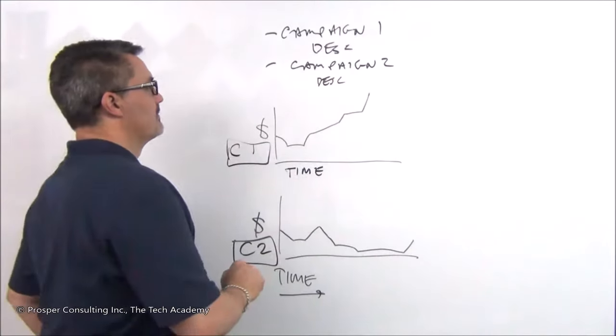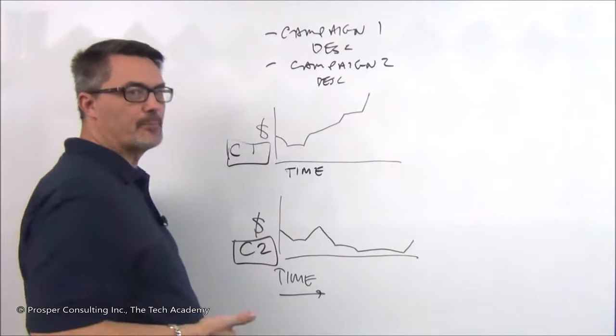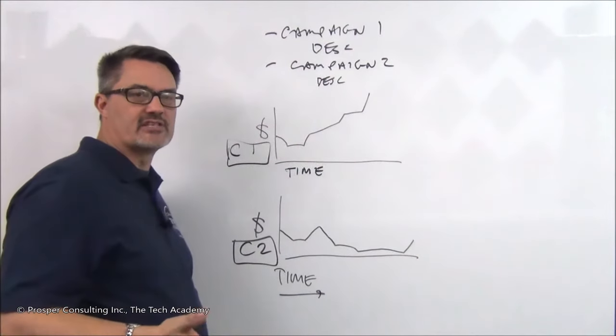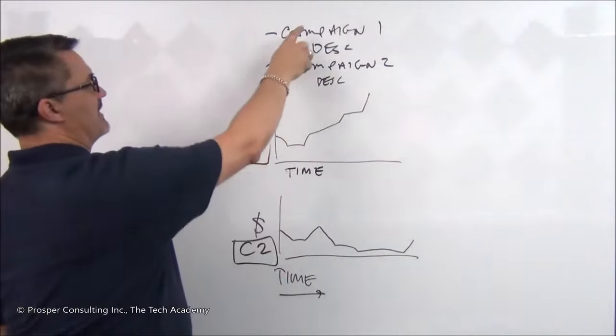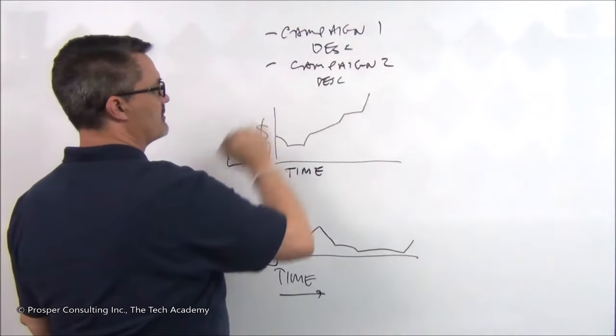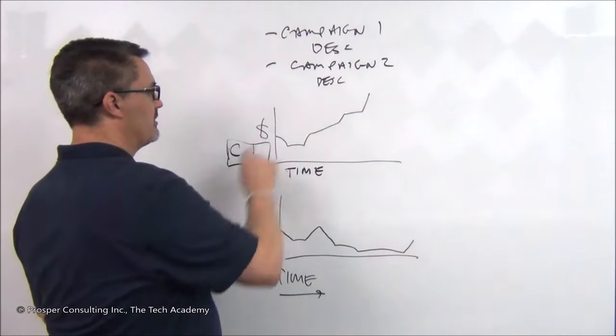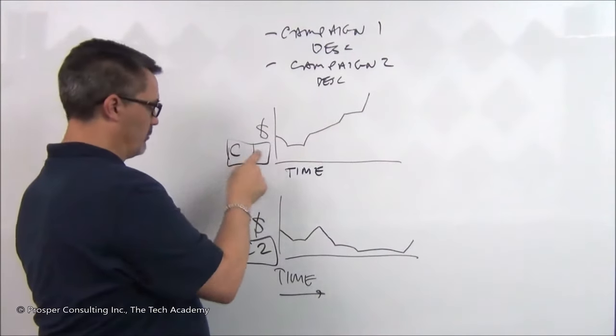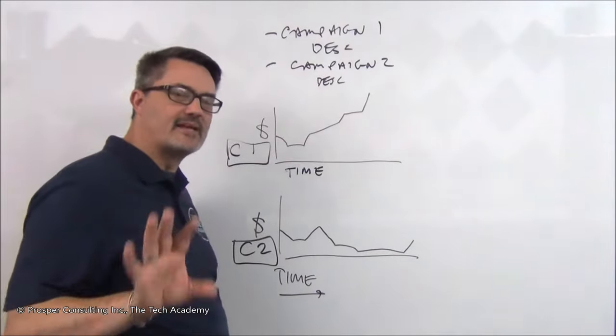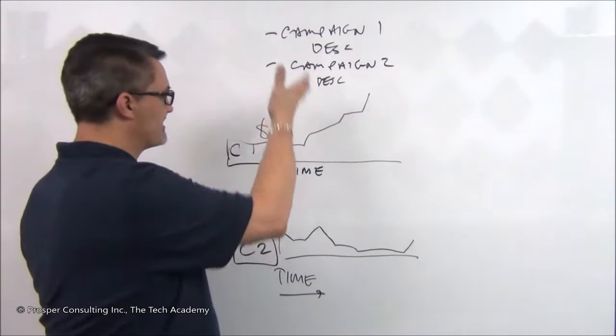Here you can see an illustration of this. We would have two different campaigns for advertising or marketing. There'd be campaign one with this description and campaign two with this description. And one could look at, over time, the resulting sales for each campaign. Again, very basic illustration, but this is statistical analysis.